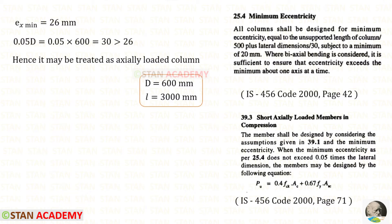To find the area of the longitudinal reinforcement Asc, we can use this formula. To use this formula there is one condition: we have to check whether the column is axially loaded. When the minimum eccentricity as per clause 25.4 does not exceed 0.05 times the lateral dimension.